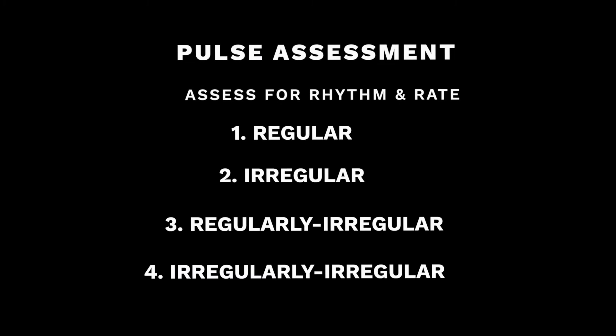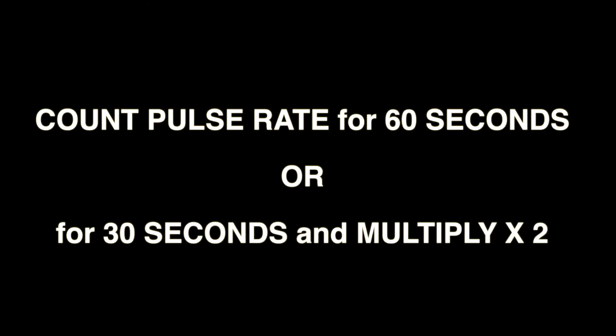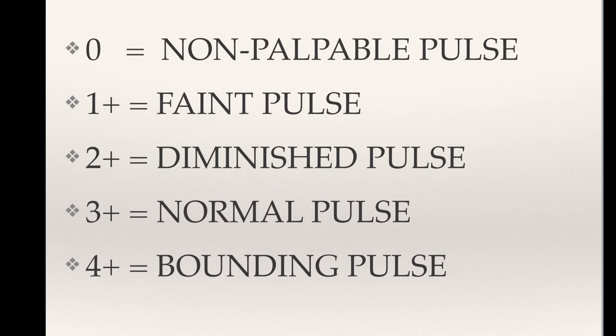When we assess a pulse, we want to assess for the rhythm and the rate. Pulses can be described as regular, irregular, regularly irregular, or irregularly irregular. Normally you want to count for one minute. You can count for 30 seconds and multiply by two; however, there are some instances when you do want to check it for one minute, such as when you're going to give a cardiac medication or if you're not familiar with the patient. You also want to assess the strength of a pulse. Pulses can be described as zero, indicating no palpable pulse; one plus, indicating a faint pulse; two plus, suggesting a slightly more diminished pulse than normal; three plus, a normal pulse; and four plus, indicating a bounding pulse.